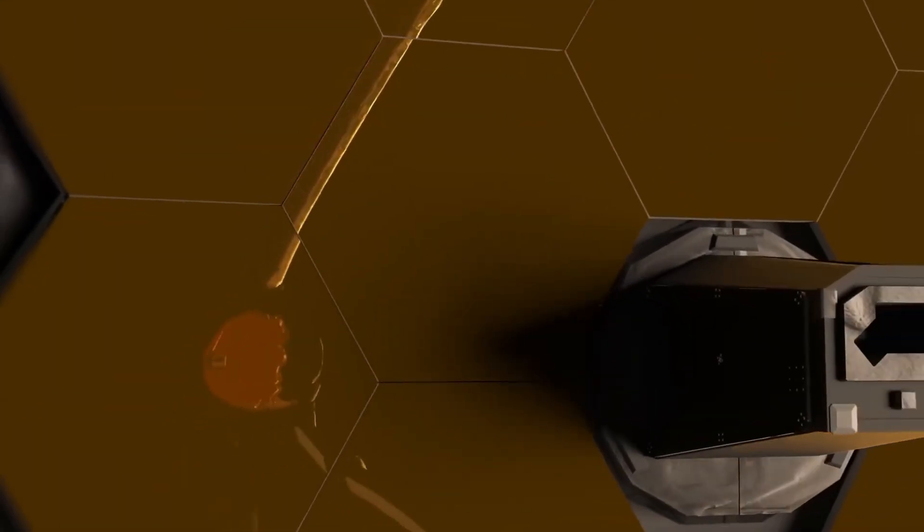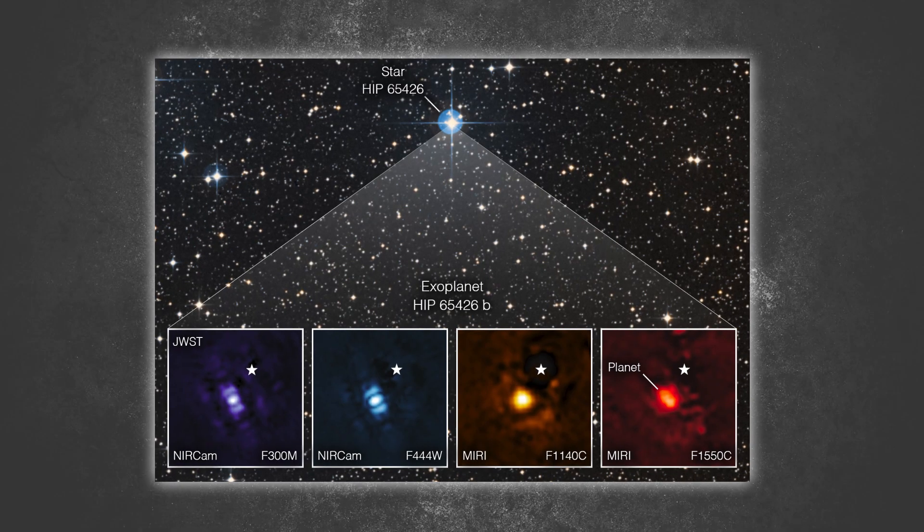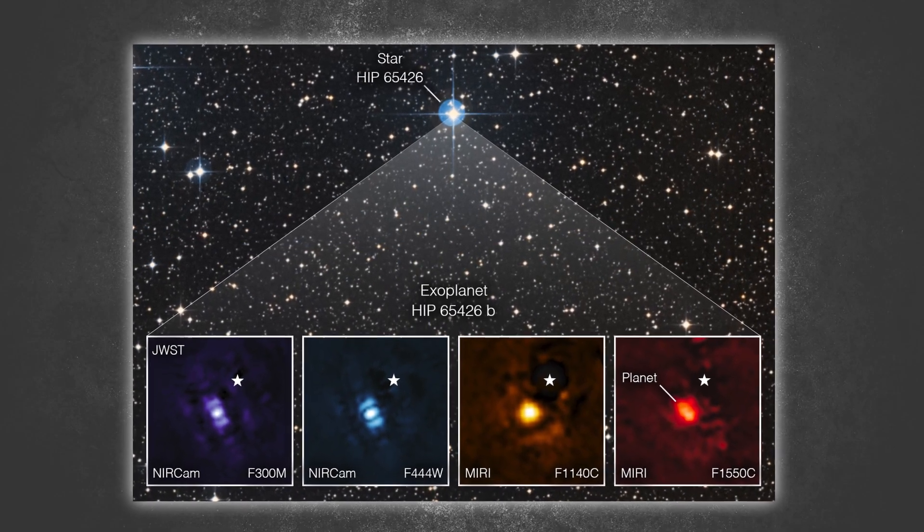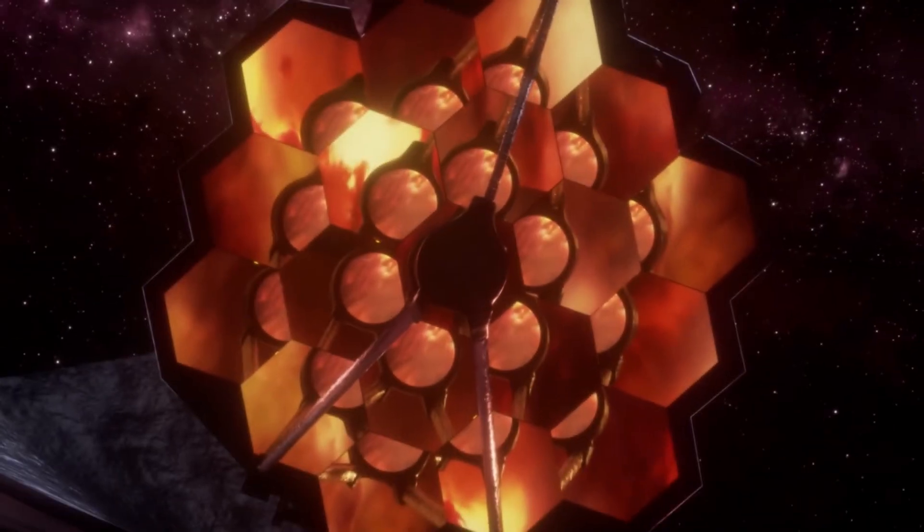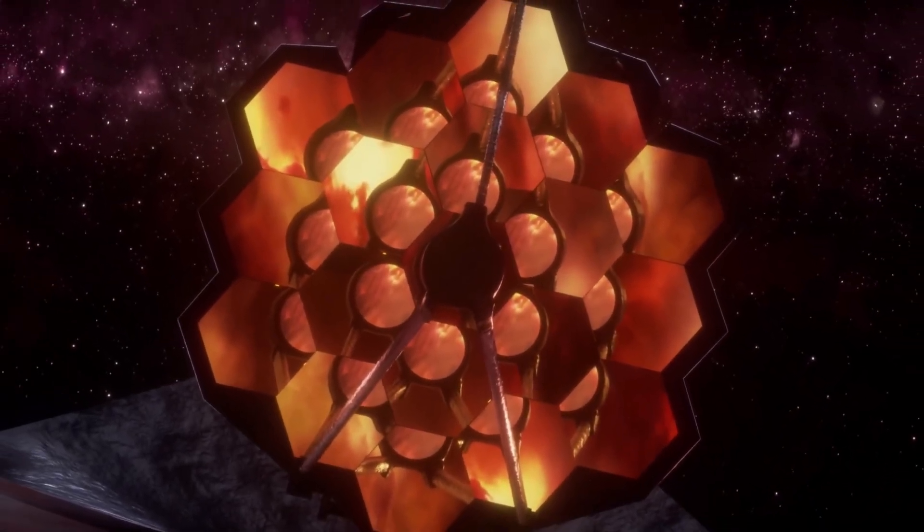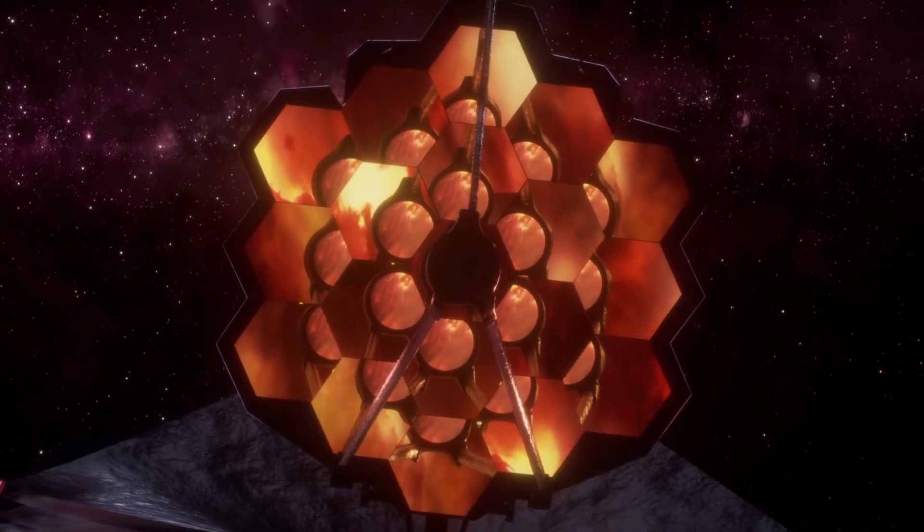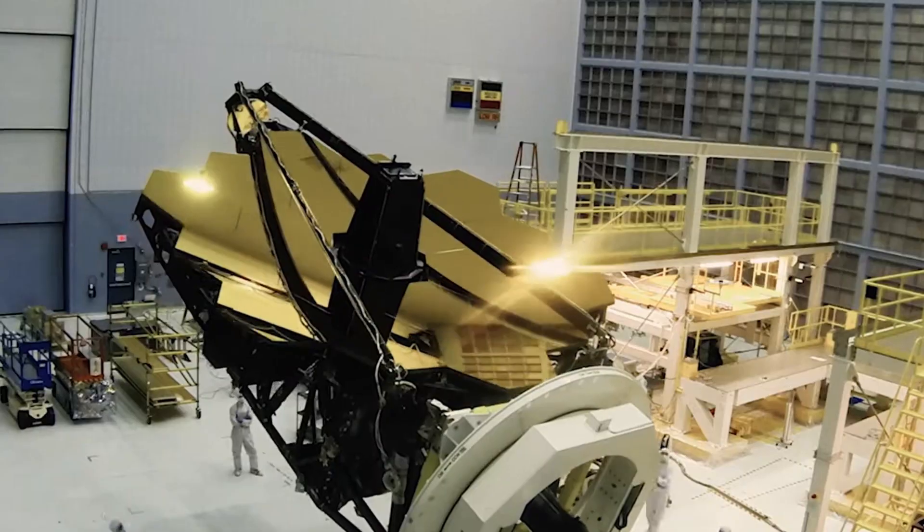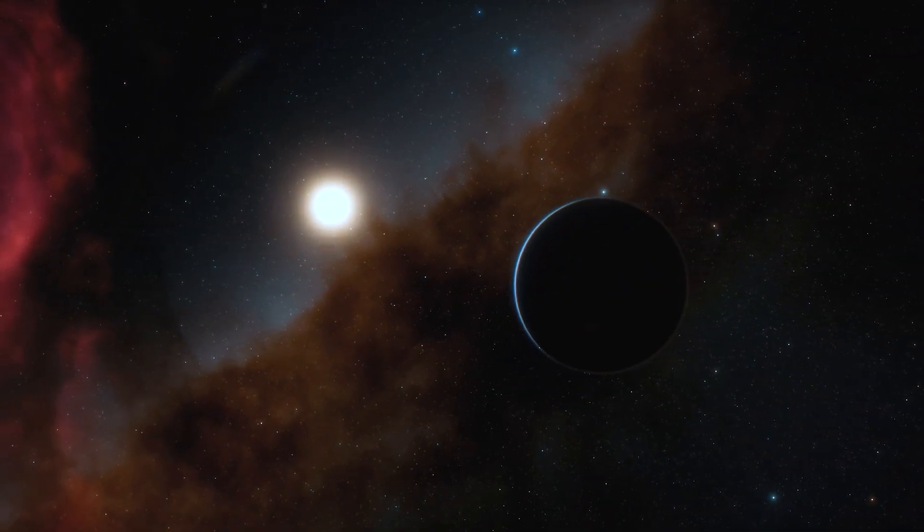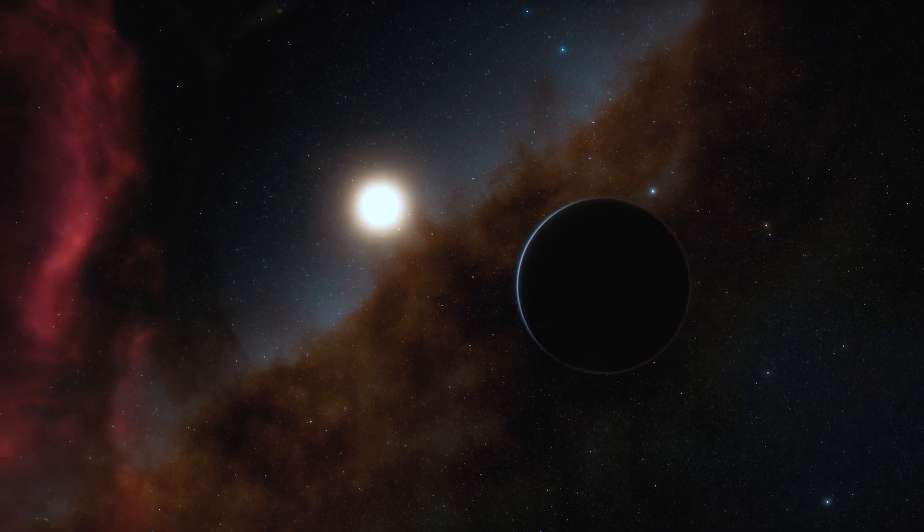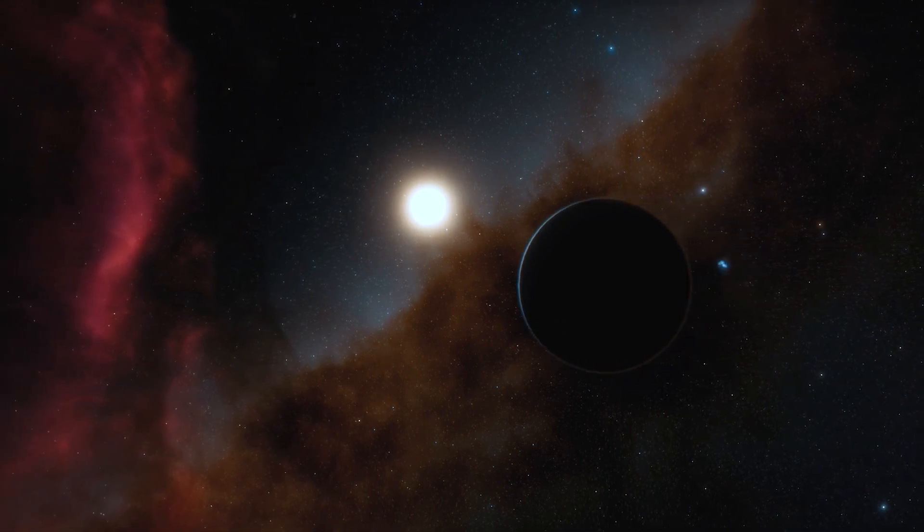The first exoplanet that Webb was able to directly image was a Jupiter-class world that revolved around a star known as HIP65426. Initial research indicates that the James Webb Telescope is operating significantly better than was anticipated based on its design specifications. This will enable more in-depth and precise observations of extraterrestrial planets than anyone anticipated was possible.